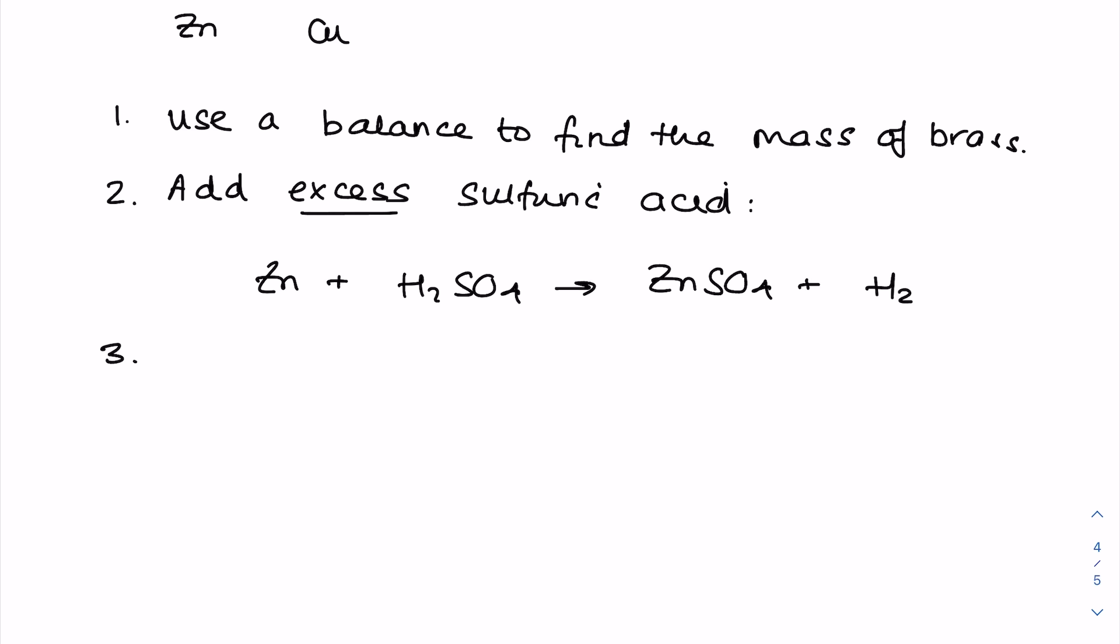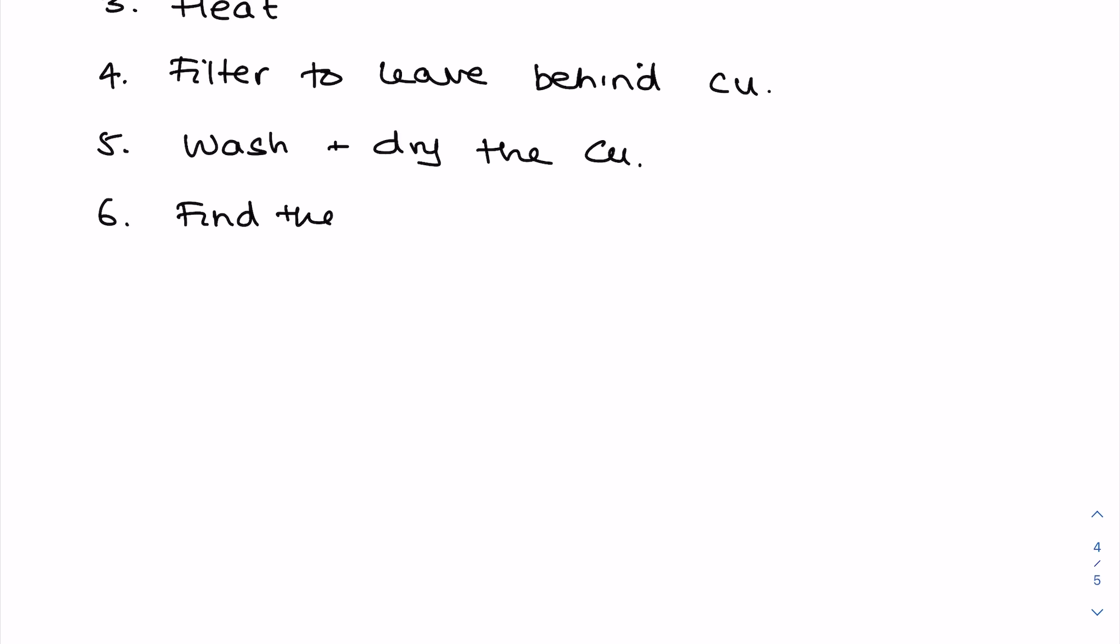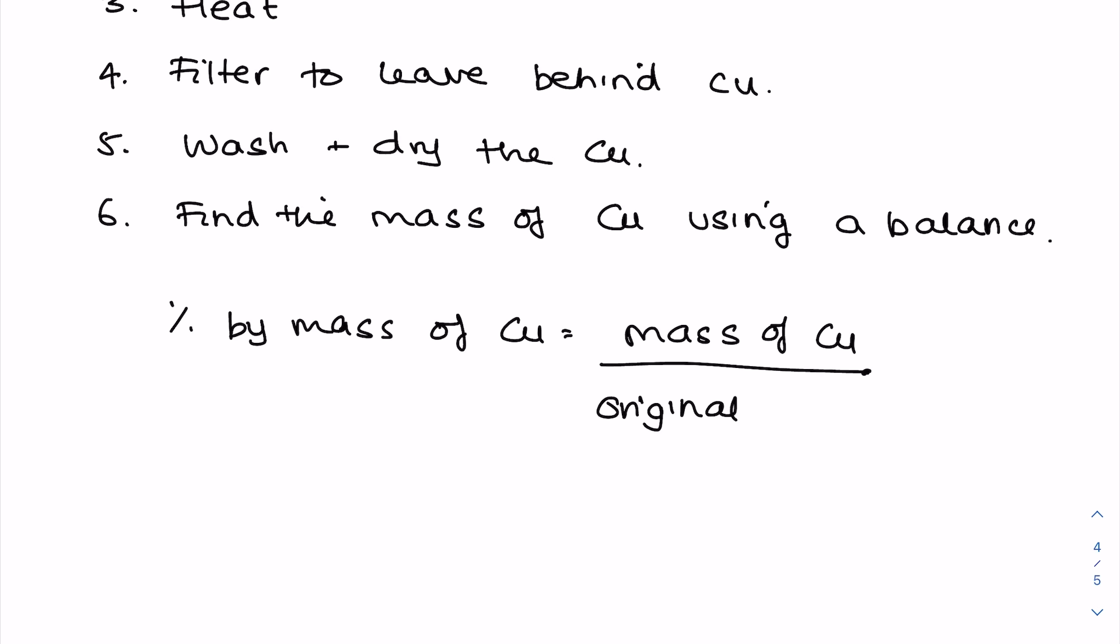Effectively removing your zinc from the brass. So now we point out that the substance, that the mixture, needs heating and then filtering, and we filter to leave behind just that unreactive copper. Then we wash and dry the remaining copper, find the mass of copper using a balance again. And to find the percentage by mass of copper in the sample, you do that final mass of copper divided by the original mass of brass times by 100.